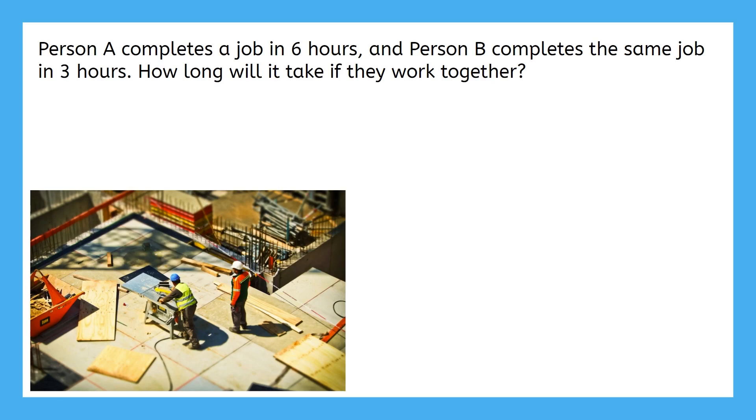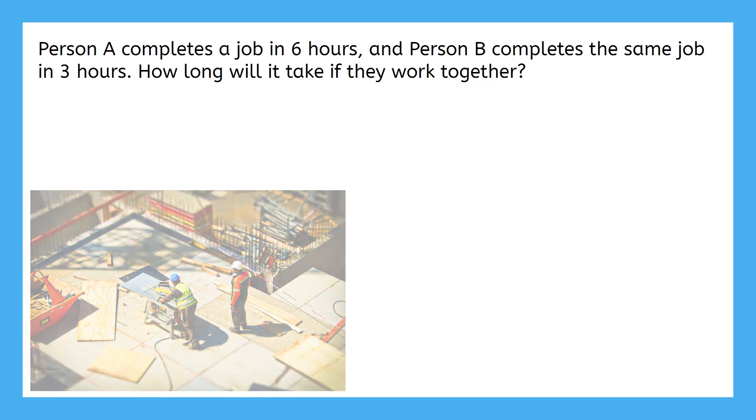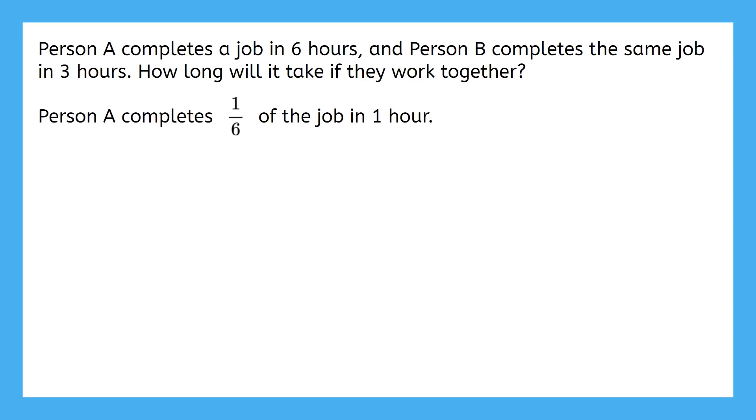Let's start by thinking about how much each person accomplishes in one hour. If person A can complete the job in six hours, then in one hour, person A would complete one-sixth of the job. One-sixth happens to be the reciprocal of six. If you forgot about reciprocals, remember you just take a fraction and flip it.